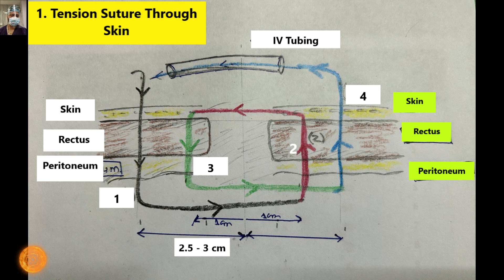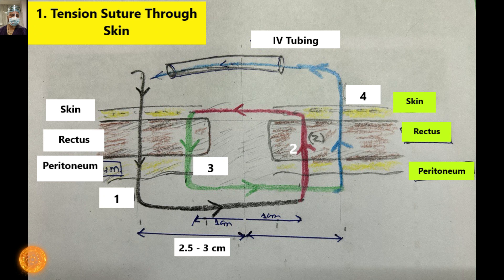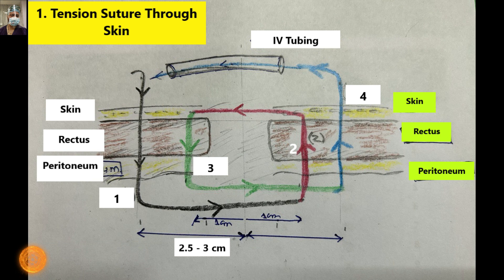There are basically four passes. The first pass, as depicted in the diagram, goes through the skin and muscle — though as demonstrated in the arcuate line video, there is no need to take a muscle bite, only the sheath. The first pass is through the skin, rectus muscle, and peritoneum. It then crosses to the other side — third pass is through peritoneum, muscle, and subcutaneous tissue. The fourth pass goes through and through the skin. Skin passes are approximately 2.5 to 4 centimeters.